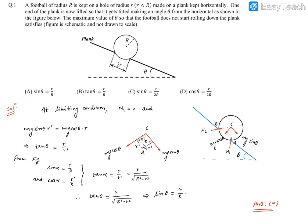It reads: a football of radius R is kept on a hole having radius smaller than capital R, made on a plank kept horizontally. Then after one end of the plank is now lifted so that it gets tilted, making an angle theta with the horizontal, as shown in this figure.